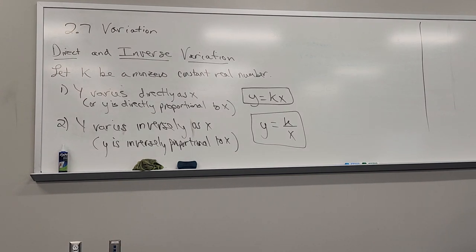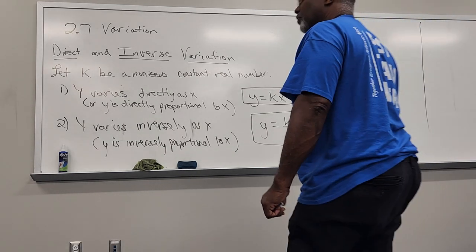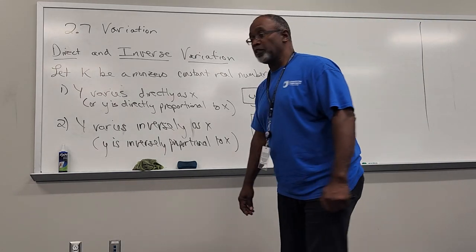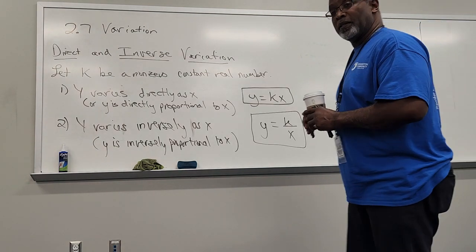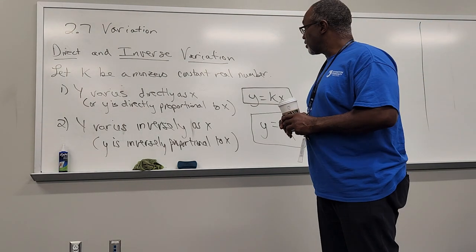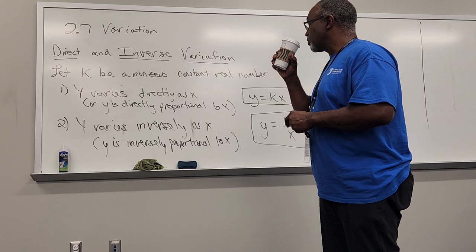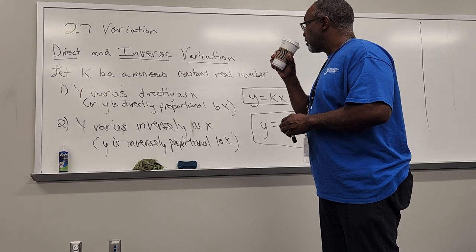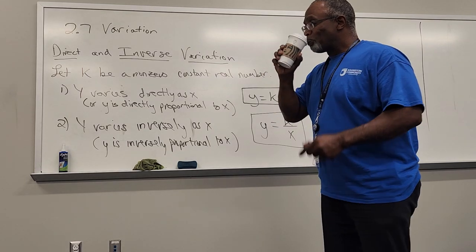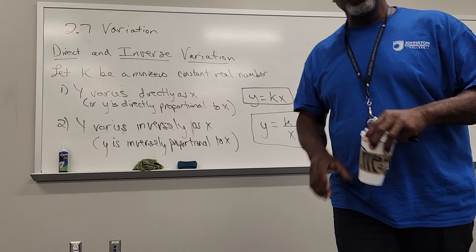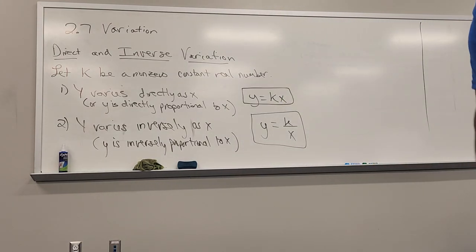Today we're going to talk about section 2.7, direct and inverse variation. This is in your text, and I suggest you read it because I don't discuss everything in the section. Reading will give you a little more information and make it clearer.